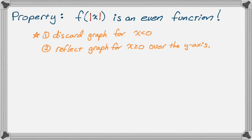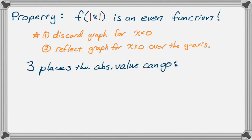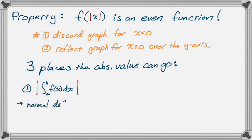There are three places that an absolute value can go when you're doing integrals. The first is the absolute value of the definite integral. Definite integrals are just numbers, so this is really just saying take the absolute value of whatever number you get. You do the definite integral the normal way, and then whatever you get, you make it positive. So if you get negative 25, the absolute value of that is positive 25 and you're done.